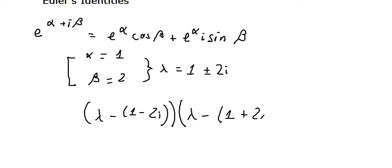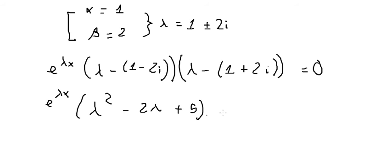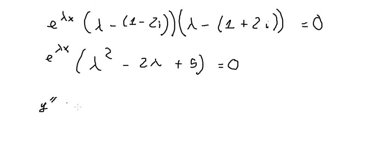We multiply lambda minus this one by lambda minus this one, giving us lambda squared minus 2·lambda plus 5 equals zero. So the differential equation is: the second derivative minus 2 times the first derivative plus 5y equals zero.